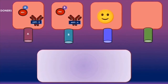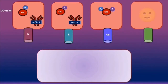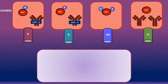Blood type AB means the red blood cells have both A and B antigens but there are no anti-A or anti-B antibodies. Blood type O means the red blood cells do not have either A or B antigens, but there are anti-A and anti-B antibodies.